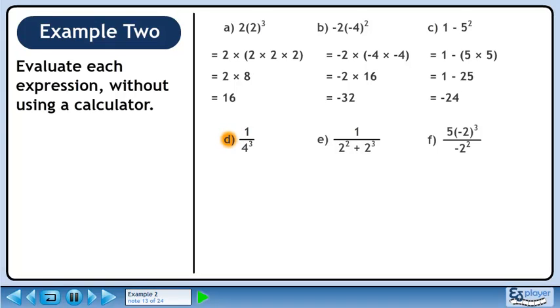In Part D, we'll calculate 1 over 4 cubed. 4 cubed is the same as 4 times 4 times 4. This gives us 1 over 64.